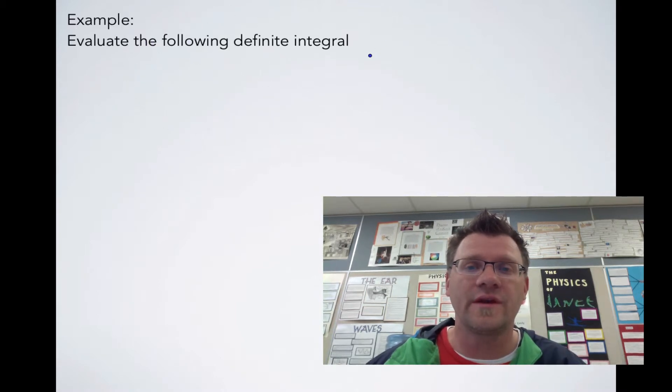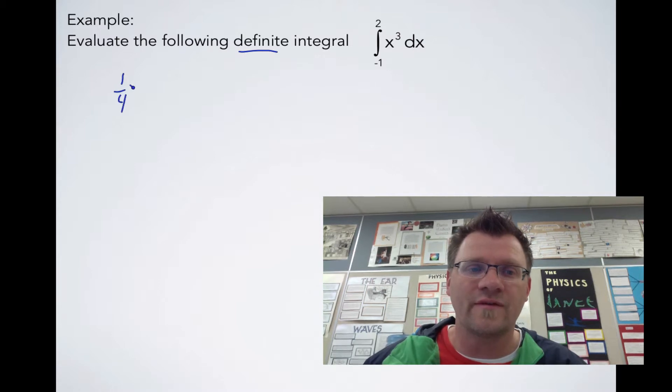Example: Evaluate the following definite integral. We have the integral from -1 to 2 of x³. It's called a definite integral because we have two endpoints. First, we need to know what the integral of x³ is, which is 1/4 x⁴.